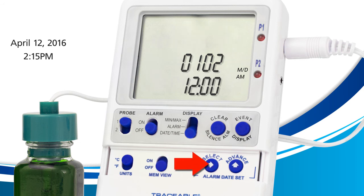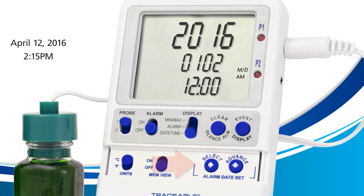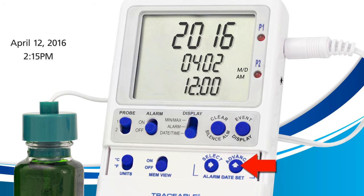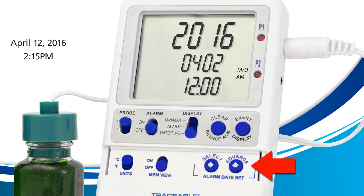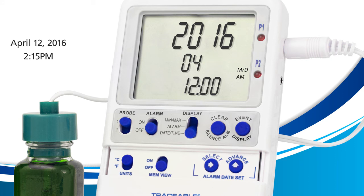Now we're on the month field. Press the advance button until you reach the number 4 for April, then press the select button to move on to the day field. Here I need the number 12, so I'll press the advance button until I reach 12. Once it's at 12, press the select button to move on to the last row.